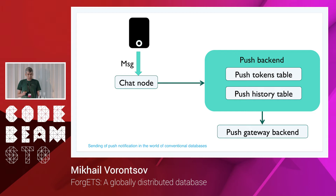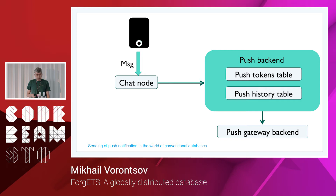You don't want to send more and more push notifications to that user, so you need to space them out. This means another round trip to the recent push history database, which tells you when we last sent a push notification. Finally, if we decide it's worth sending the push notification now, we need two more network trips: first to update the recent push history database, and then to send the request to the push gateway backend.